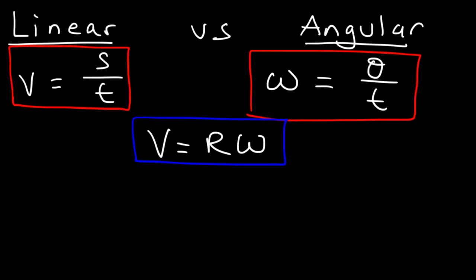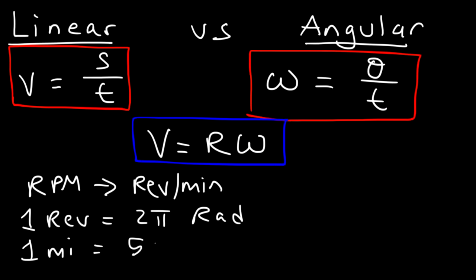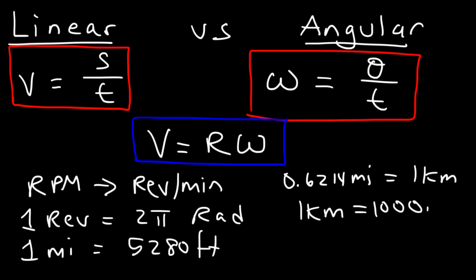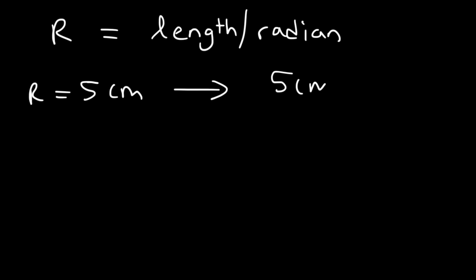Here are some conversions you need to know. RPM means revolutions per minute. One revolution is equal to 2π radians. One mile is 5,280 feet. 0.6214 miles equals 1 kilometer, and 1 kilometer is 1,000 meters. It helps to think of the radius as the length per unit radian — so if the radius is 5 centimeters, think of it as 5 centimeters per radian.